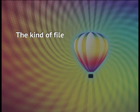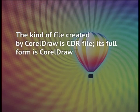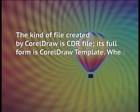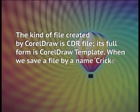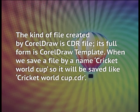CorelDRAW Files: Dear students, before we proceed, we would like to grab your attention and upgrade you about CorelDRAW's different file format system. The kind of file created by CorelDRAW is a CDR file. Its full form is CorelDRAW template. When we save a file by a name like 'cricket-worldcup,' it will be saved as cricket-worldcup.cdr.